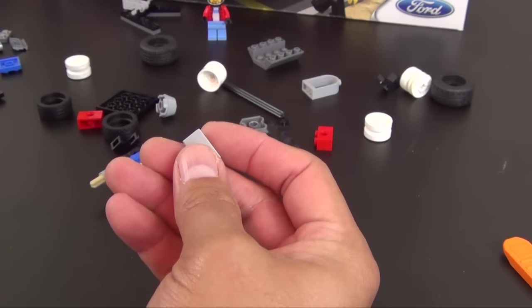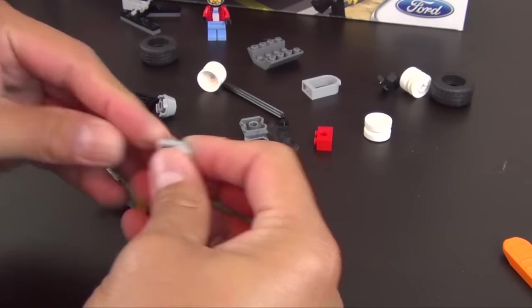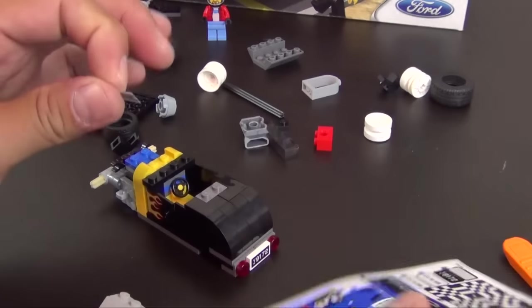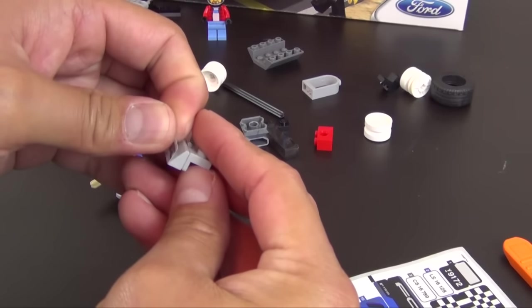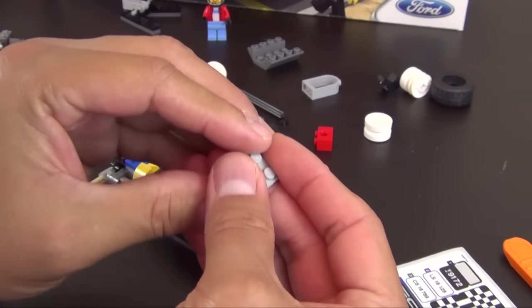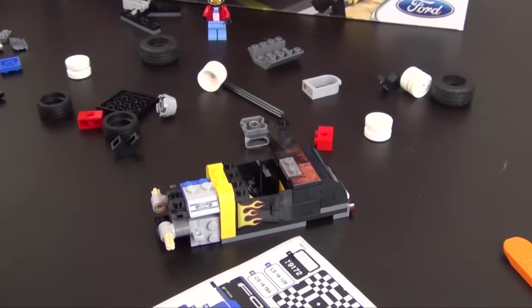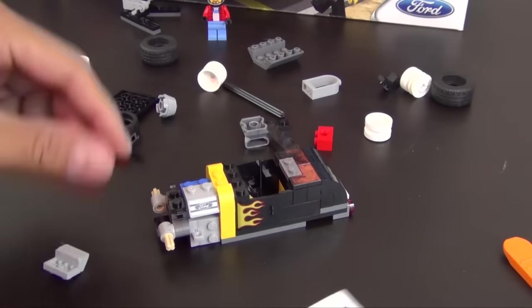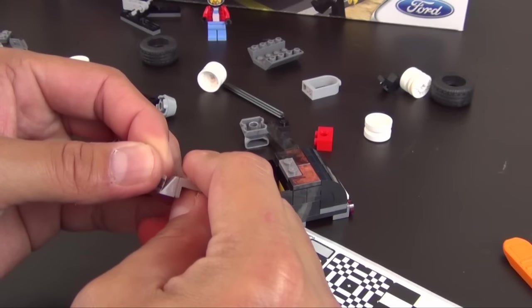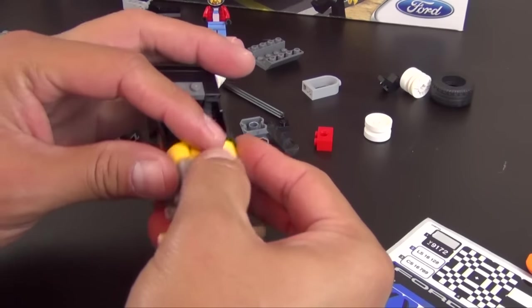All right, we have a bracket with a double white cheese slope that's facing upwards and we're going to put sticker number 14 on. It's the Ford logo. Basically have one on each side. All right, very good.